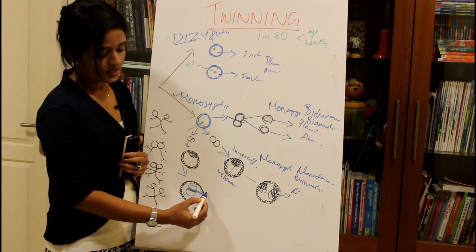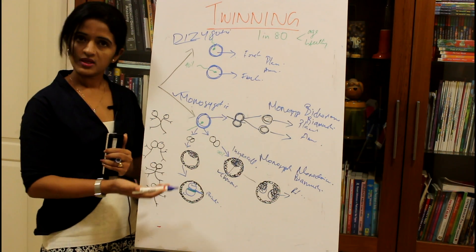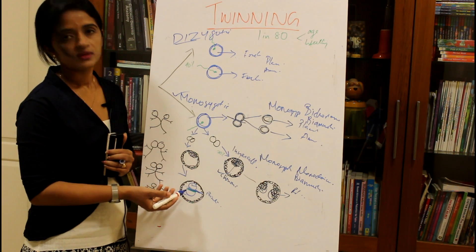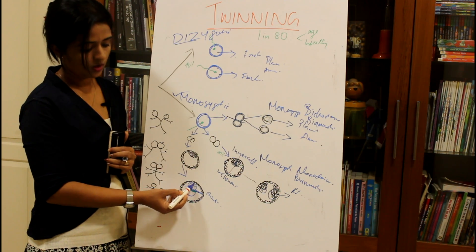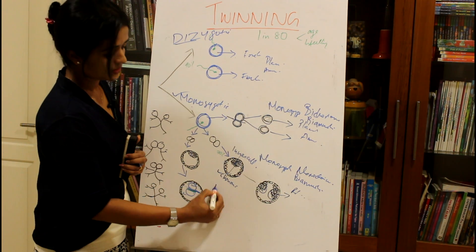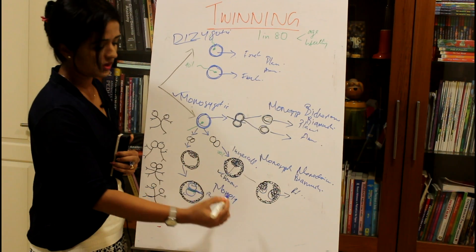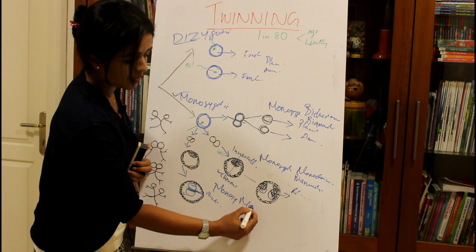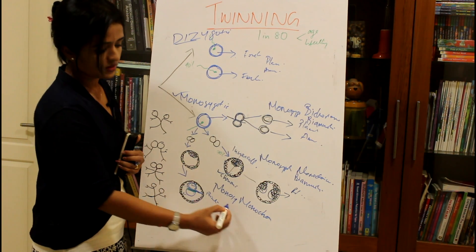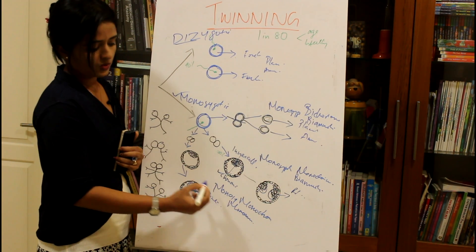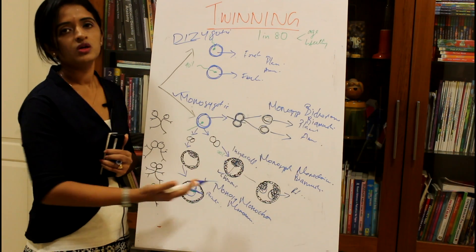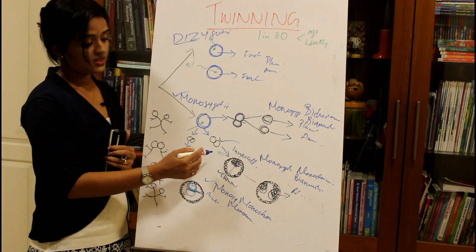When the bilaminar germ disc divides before the primitive streak is formed, both the chorionic and amniotic cavities are already present and cannot split. So this twin is named monozygotic monochorionic mono-amniotic. This is said to be the most dangerous condition among all types of twins.